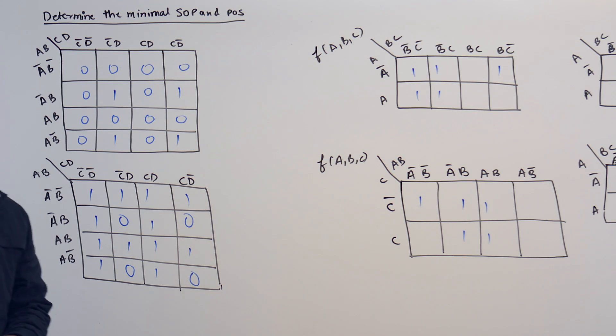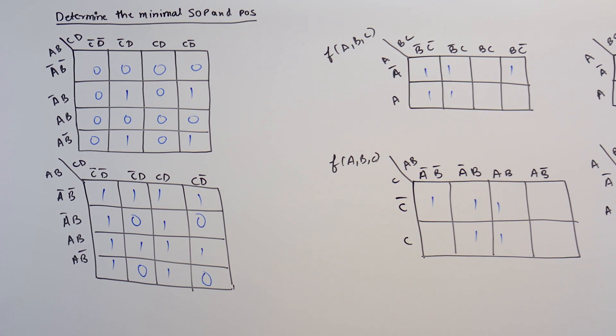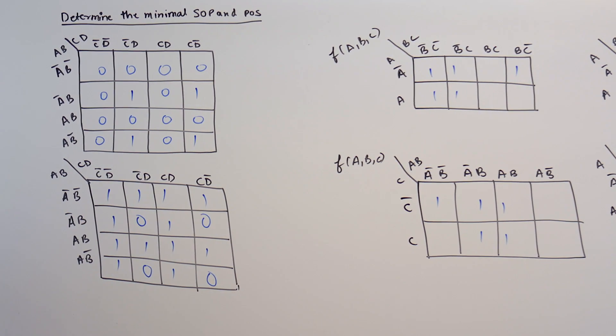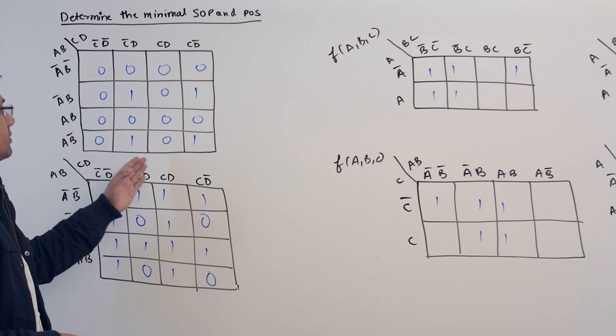Consider this question. Here they are saying: determine the minimal SOP and POS for these forming K-maps. Consider the first K-map.